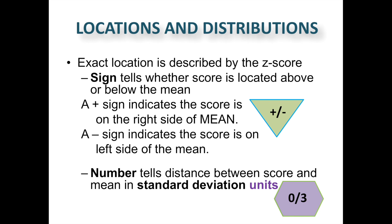Two things to keep in mind when we talk about z-scores: the sign and the number. A plus or positive sign indicates the score is on the right side of the mean — that it's above average. A negative or minus sign indicates the score is on the left-hand side of the mean, symbolizing that it's below average. Now, above doesn't necessarily mean good; if we're talking about debt, you want to be below average. Negative doesn't necessarily mean bad — it depends on context. The number after the plus or minus sign tells the distance between the scores in standard deviation units.